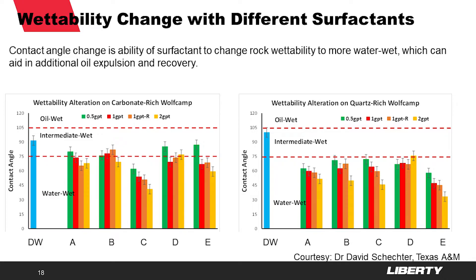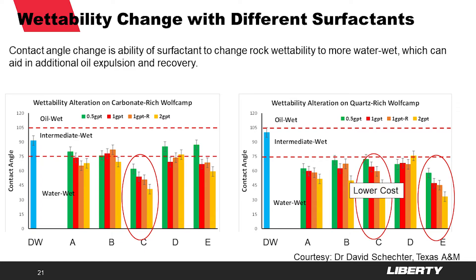Here's an example from the Wolf Camp again. On the left side you see a carbonate-rich Wolf Camp — distilled water is the blue bar. The contact angle change represents the ability of the surfactant to change the rock wettability from a more oil-wet system to a water-wet system, which can expel the oil. For the carbonate-rich Wolf Camp, you could argue that surfactant C achieves the most contact angle reduction. A contact angle above 105 degrees is considered oil-wet, below 75 degrees is water-wet, and in between is intermediate-wet — surfactant C seems to do the best job at all concentrations. But it's also a function of mineralogy: in the quartz-rich Wolf Camp, surfactant E may be the best, though it is a very high-cost surfactant. So it may be acceptable to use a lower cost surfactant such as surfactant C to change rock wettability at lowest cost.